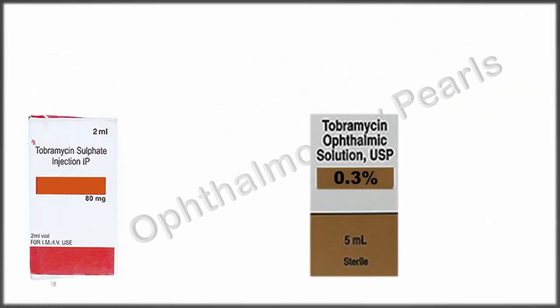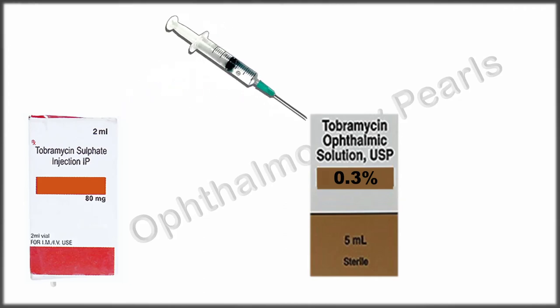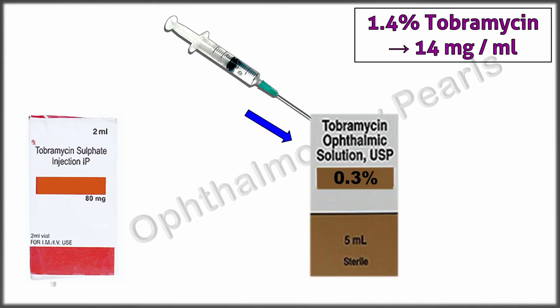For tobramycin or gentamicin, withdraw 2 ml from an intravenous vial that contains 40 mg/ml — that is, 80 mg of the drug — and add it to a commercially available topical solution to give 14 mg/ml, or 1.4%.